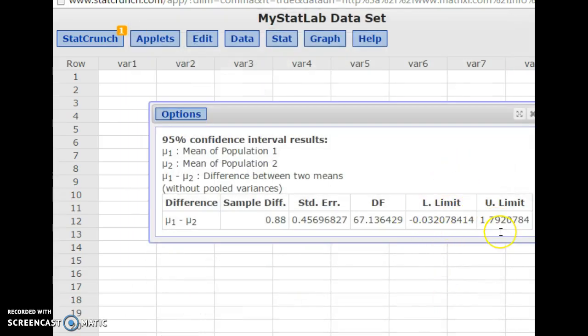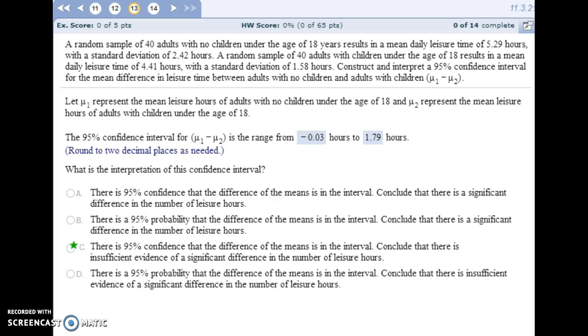And you'll be given the lower limit and upper limit of your confidence interval. So we are 95% confident that the difference in the means, the difference in the amount of leisure time, is in between these limits here. And zero is in between these limits, and zero would be if the two means were the same. You subtract them, you get zero. And since zero is within our confidence interval, there's not enough evidence for us to reject our null hypothesis. So we're going to conclude that there is insufficient evidence that there is a significant difference in the number of leisure hours.